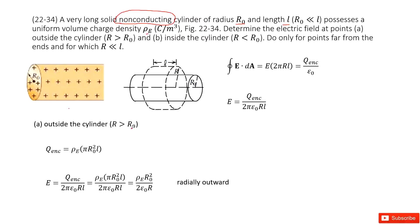So in this case we can draw a Gaussian surface, look like this one. We draw a Gaussian surface like a cylindrical surface outside of this cylindrical object. The R is larger than R₀.